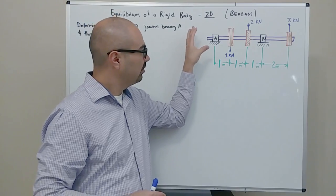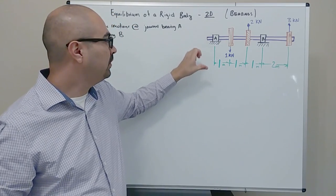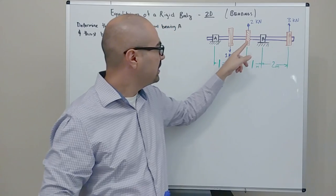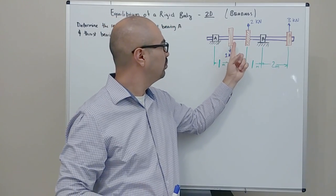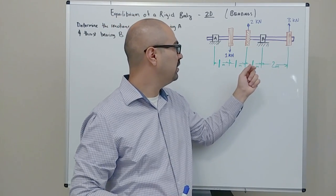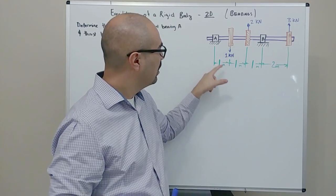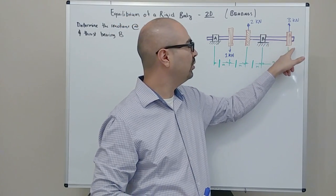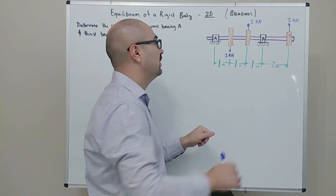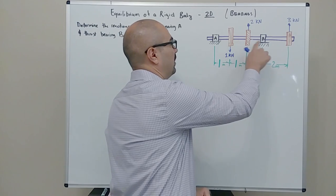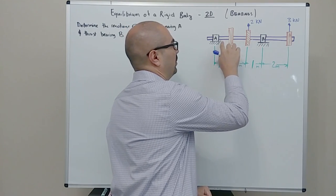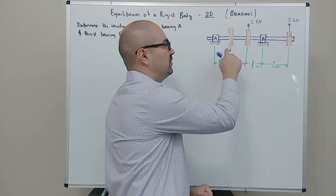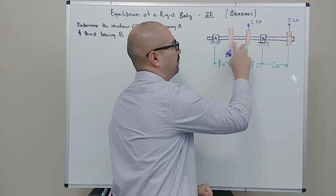Let's take a look at the example we're going to solve today. We have a shaft, and the shaft has some pulleys and maybe some gears. We're given the forces that are acting on the pulleys and the gears. We also know that the shaft is going to be supported by bearings A and B.